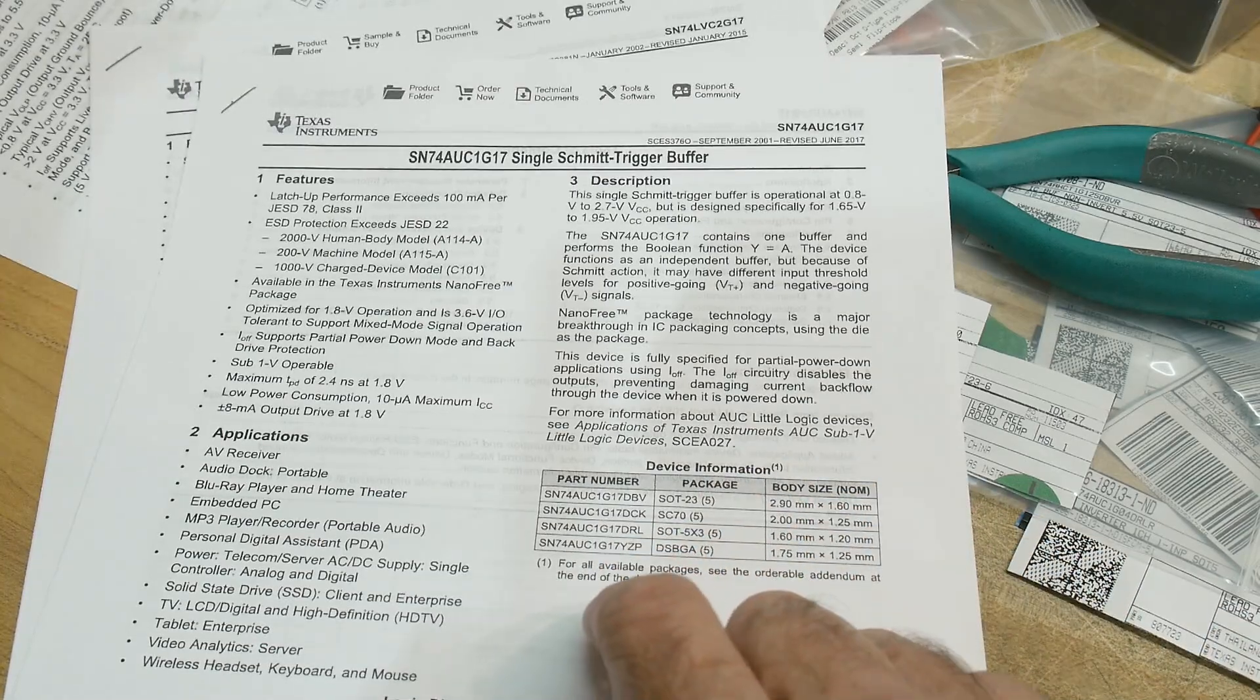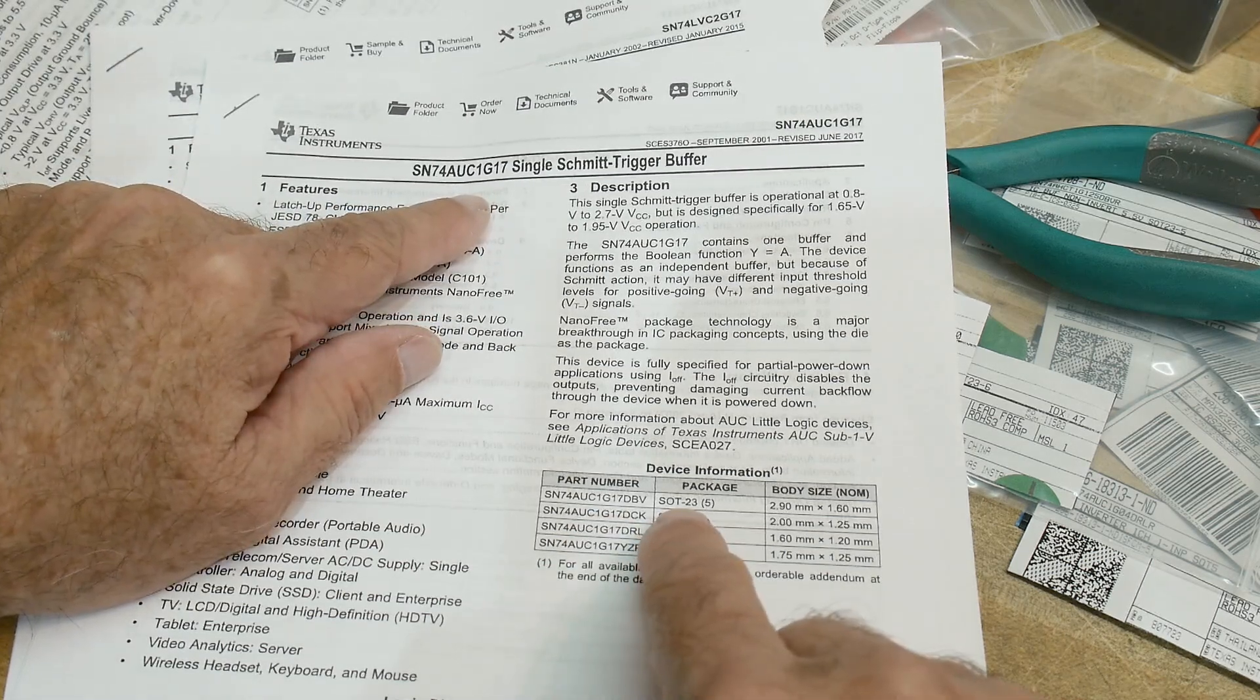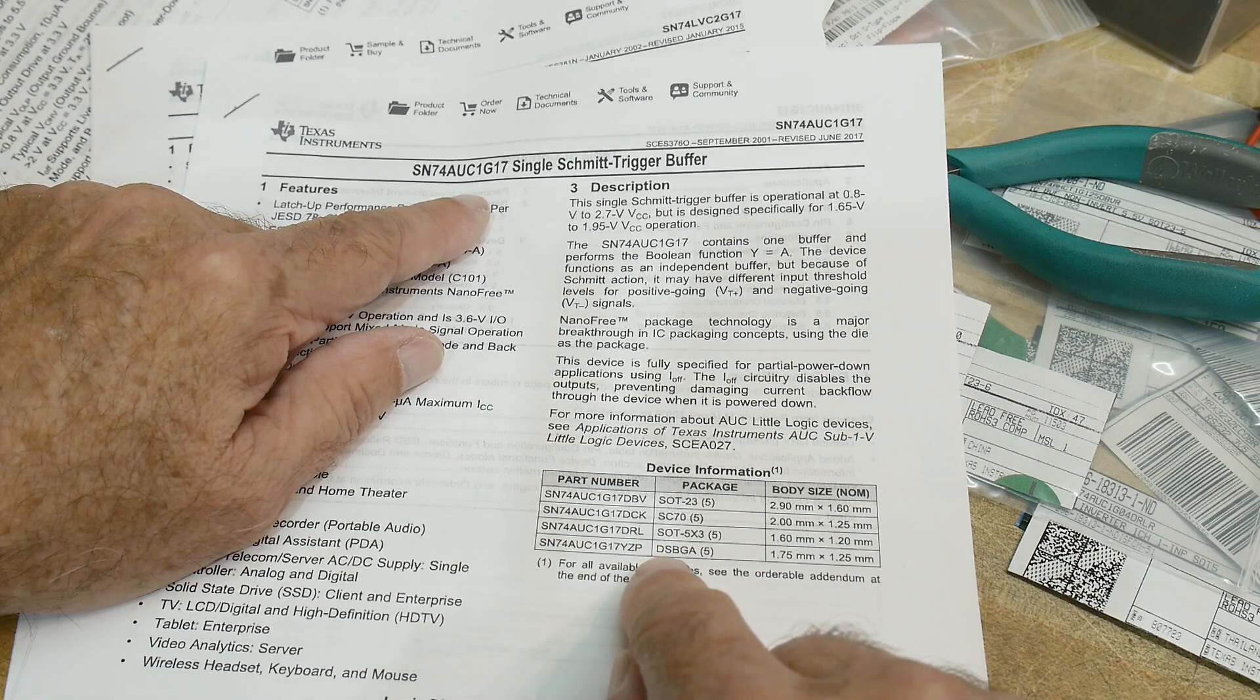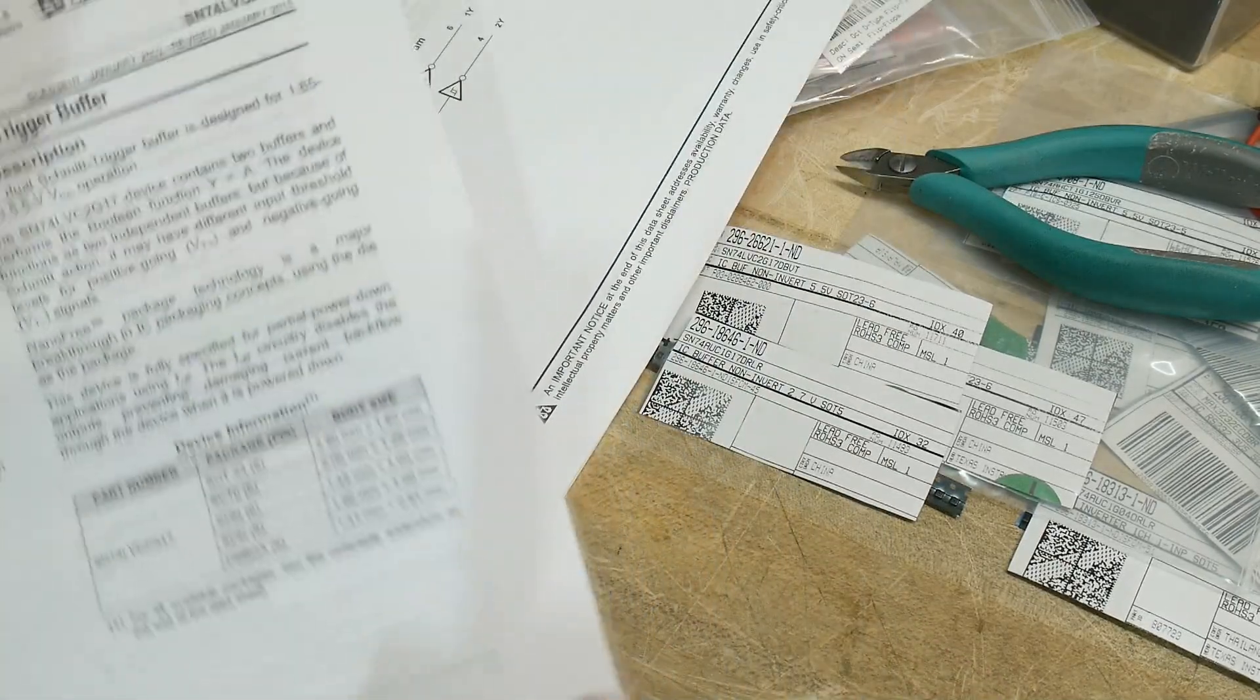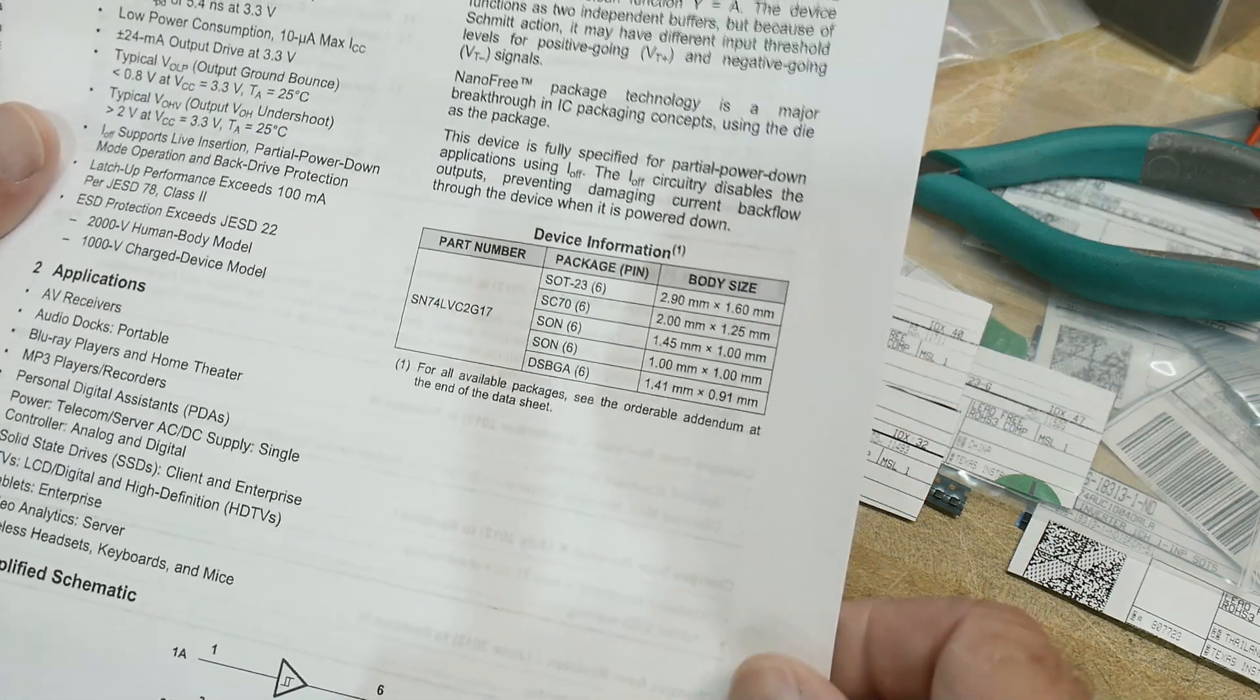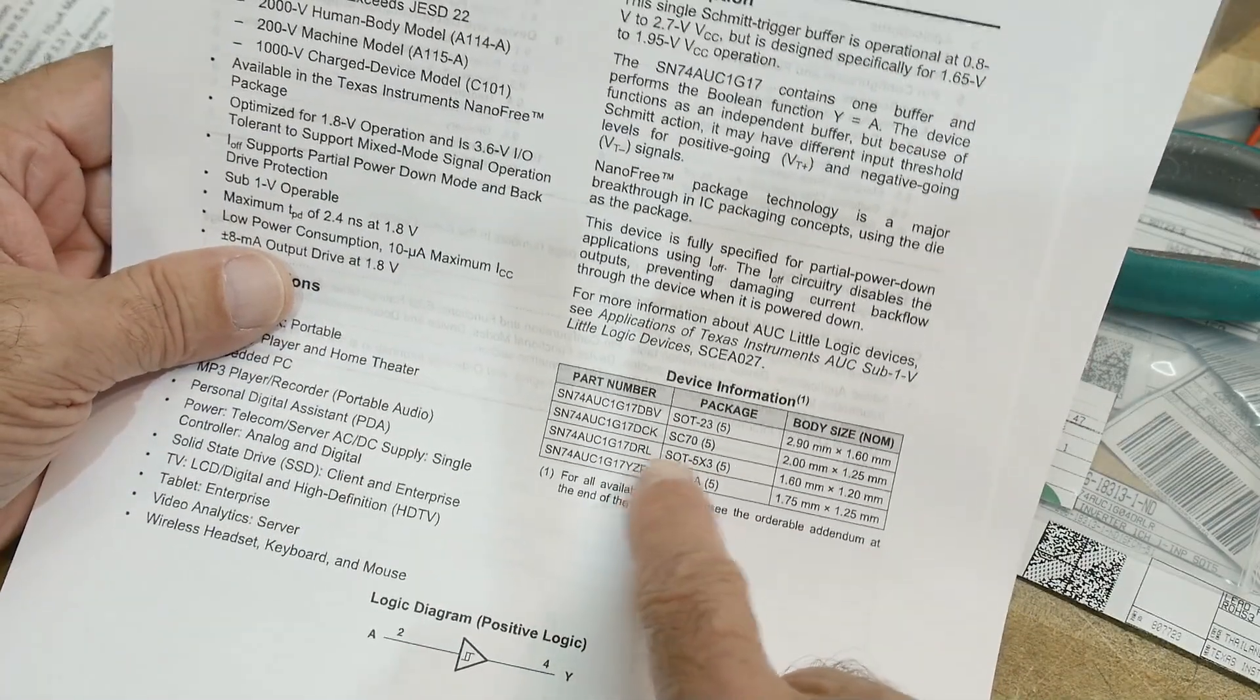Now they're both available in odd packages. So like this particular part can come in an SOT-23-5, an SC-50, an SOT-5-X-3, or a BGA. So you can get it in all kinds of different flavors. And this one here also comes in a slew of flavors. Now I happen to have an SOT-23 and an SOT-5. So which one's the SOT-5? Not even on the list here. So one of them is the teeny tiny package, and then one of them is the SOT package.